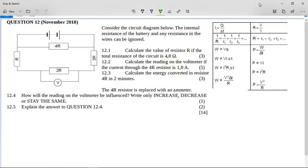All right, let's look at this grade 11 question on electricity. It's from November 2018. Here on the right hand side, I've got all the electricity formulas and here is the rest of the question. Consider the circuit diagram below. The internal resistance of the battery and any resistance in the wires can be ignored. So this is grade 11.